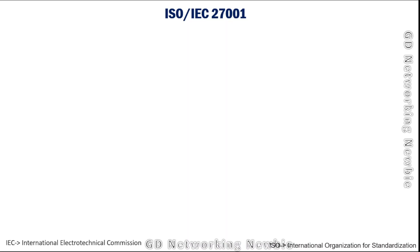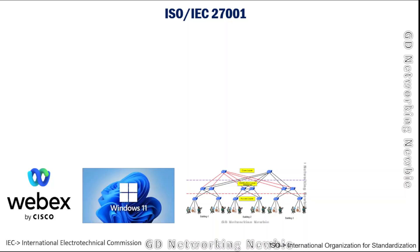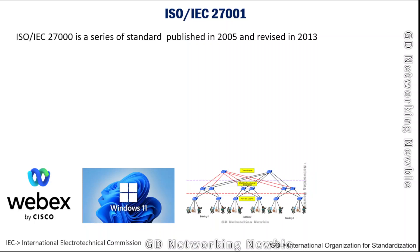In this video we are going to discuss the ISO/IEC 27001 standard. Let's say there is an organization where different people are working on different computers, with different routers and switches. They might be using various application programs and operating systems, and they can all be vulnerable to cyber attacks. The organization needs guidelines to protect their network, and ISO has introduced a series of standards — the ISO/IEC 27000 series.